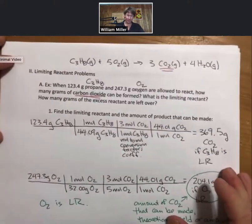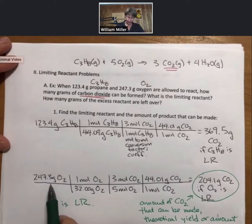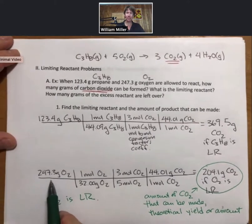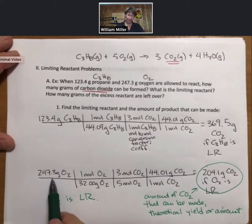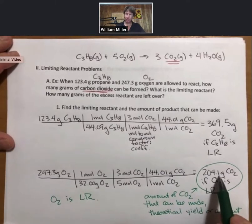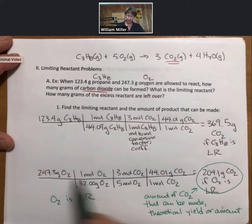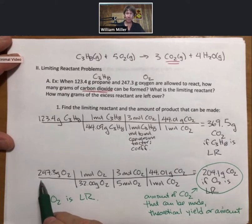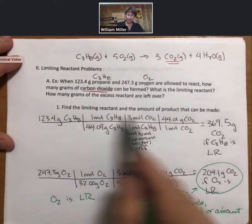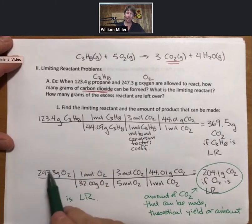This amount of oxygen is totally consumed because that's what being the limiting reactant means. There will be none left. This amount of oxygen was reacted. 204.1 grams of carbon dioxide are produced. These are real numbers for this reaction.